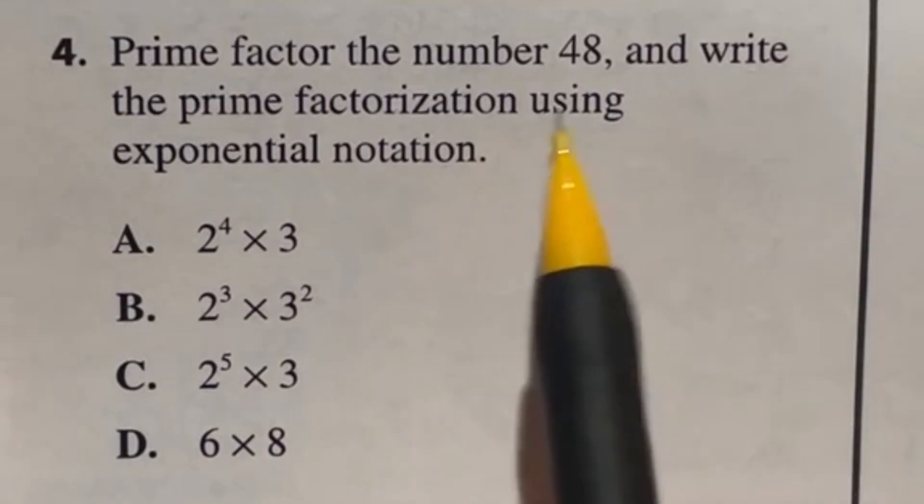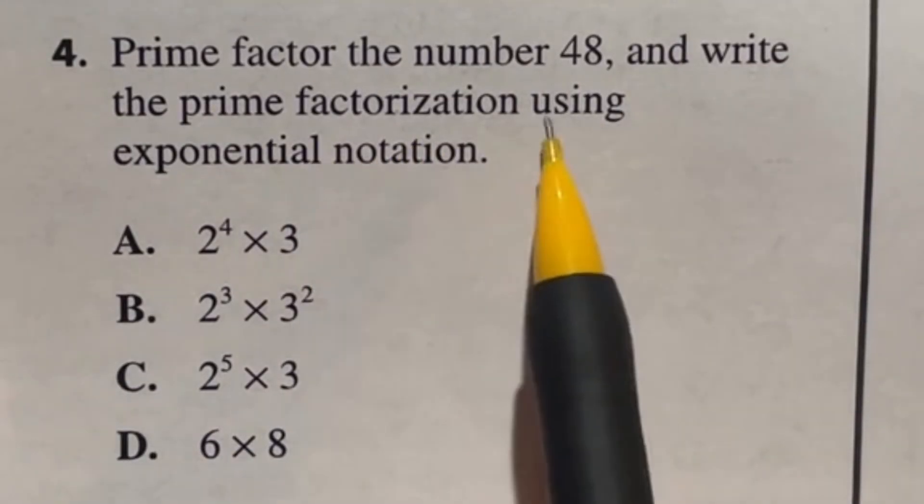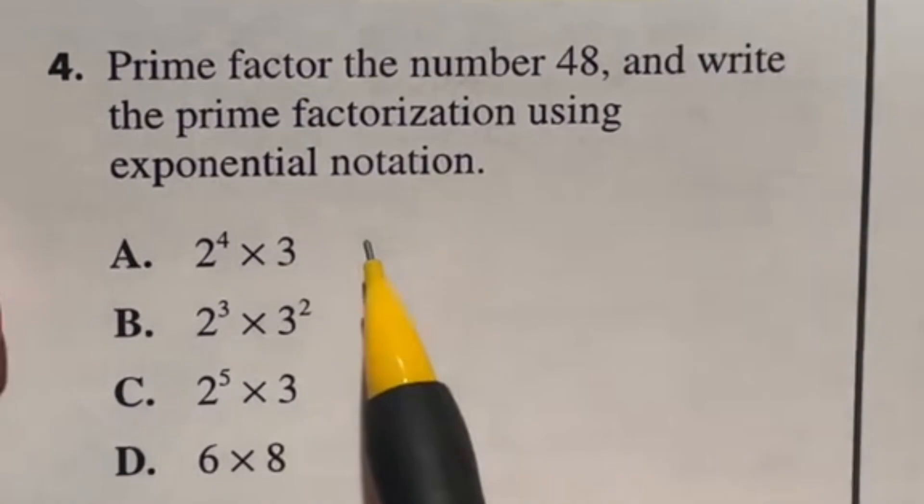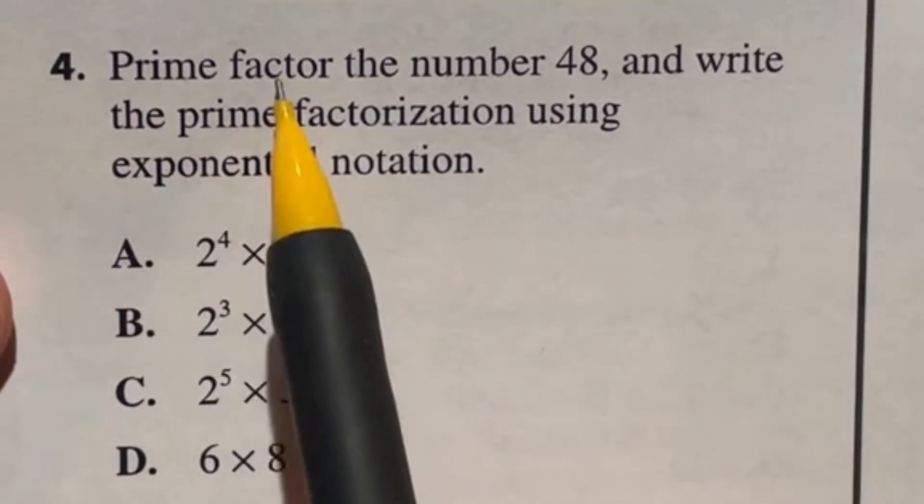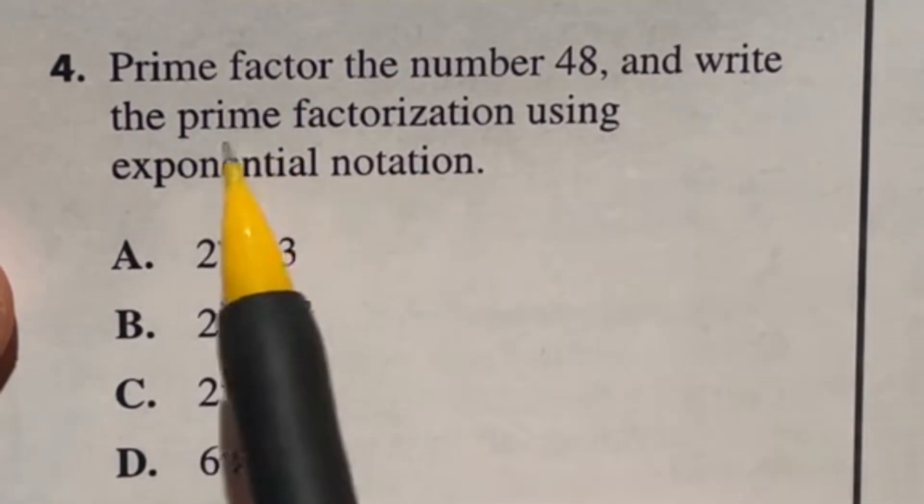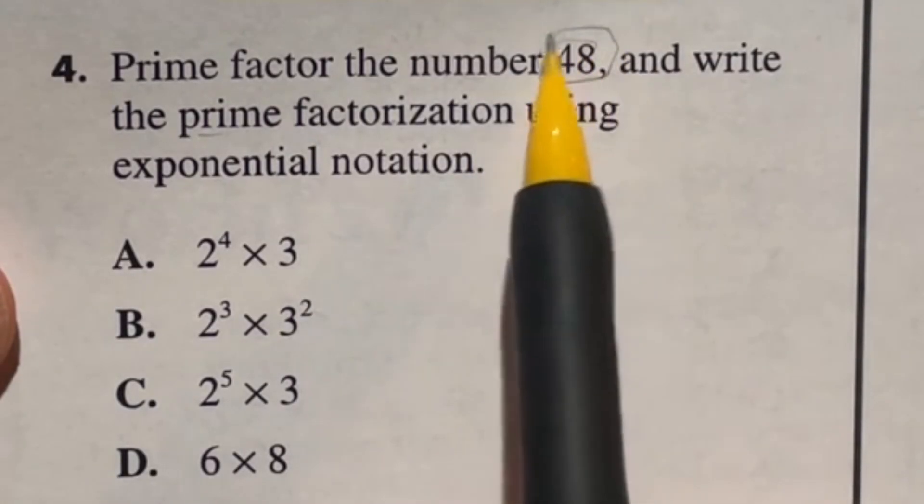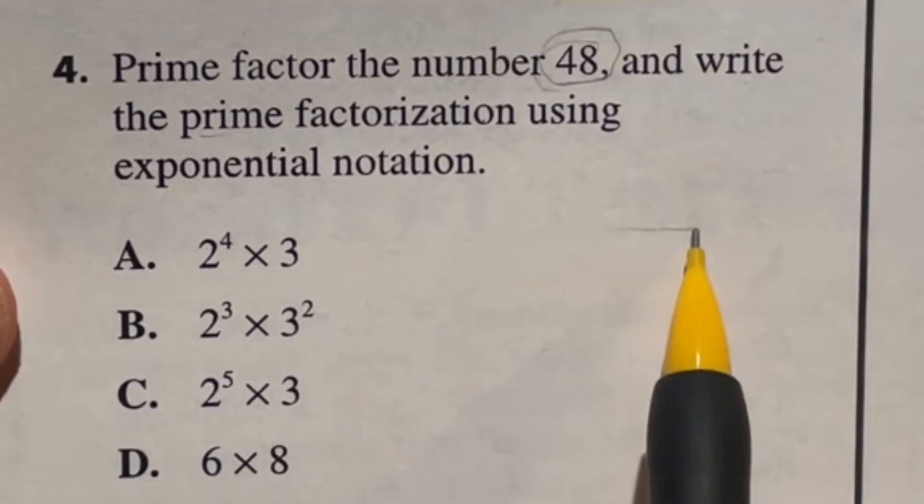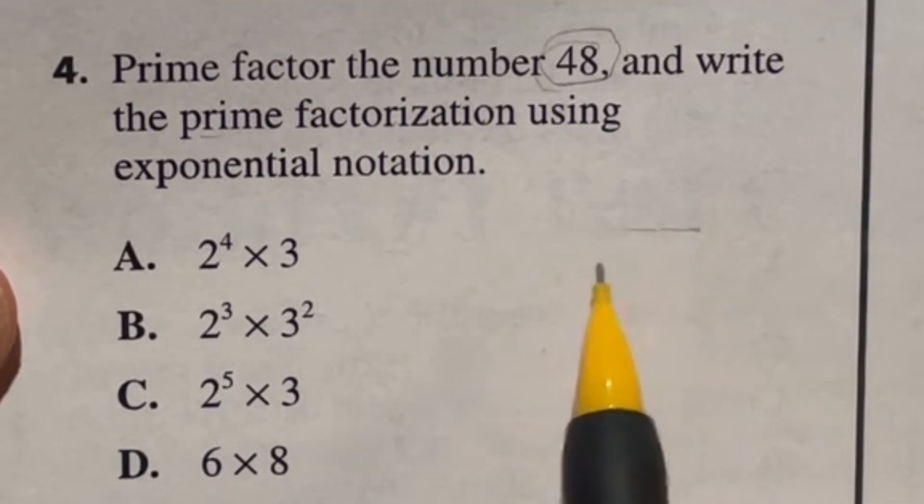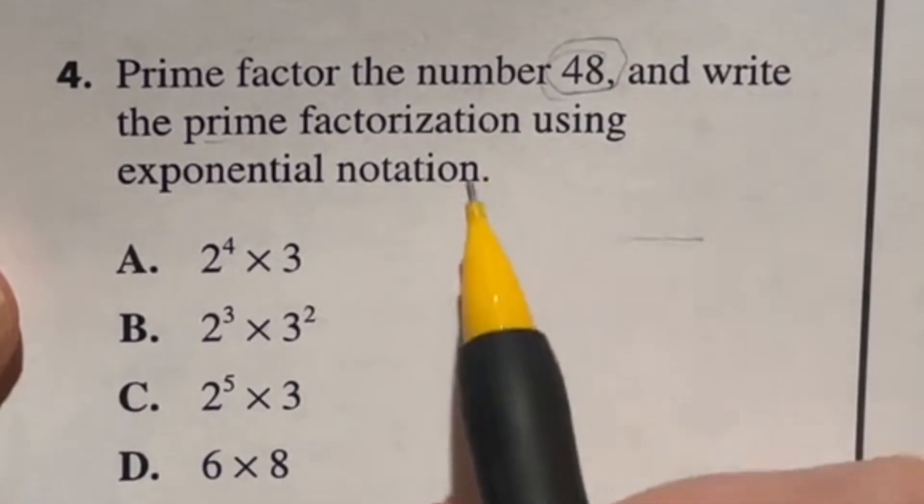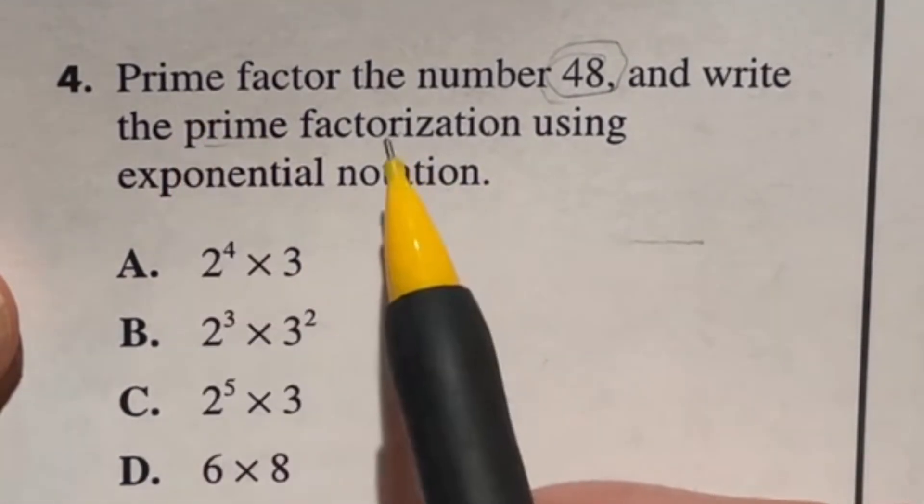Number four says prime factor the number 48 and write the prime factorization using exponential notation. Let's talk about what some of these things are. So when it says to prime factor something or to write the prime factorization, they're saying to divide this number into as many prime numbers as possible. It turns out that every number only has one list of these smallest primes that are going into it. And remember what's prime, it means it can't be divided by anything else.